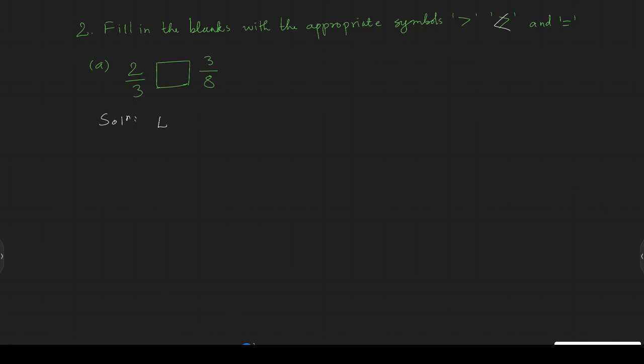To find the LCM of the denominators 3 and 8, we need to list the multiples. What are the numbers? 3 and 8. Let's list their multiples.